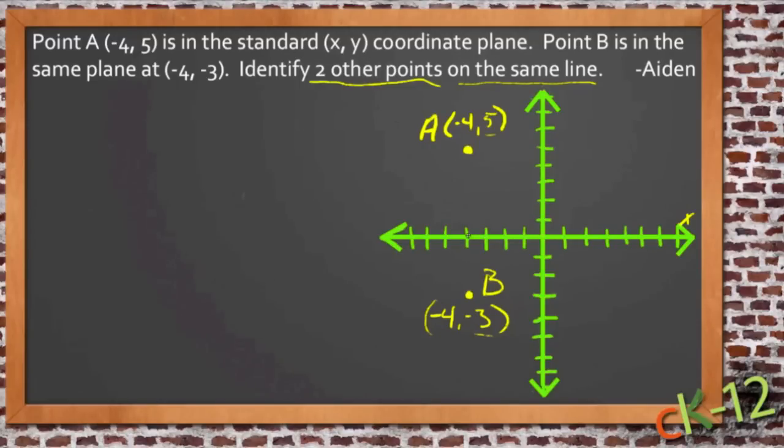So really, in this case, any other point that has an x-location of negative 4 would be on the same line. So there would be one at, for instance, negative 4, negative 2, which would be right here. There would be one at negative 4, 1, which would be right here. Oops, it wouldn't be right there. There would be one point to the left of that. It would be right there. And so on. Any other point that has an x-coordinate of negative 4 would be on that same line, because that's a vertical line.